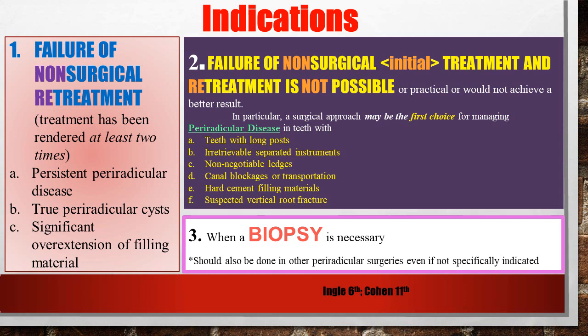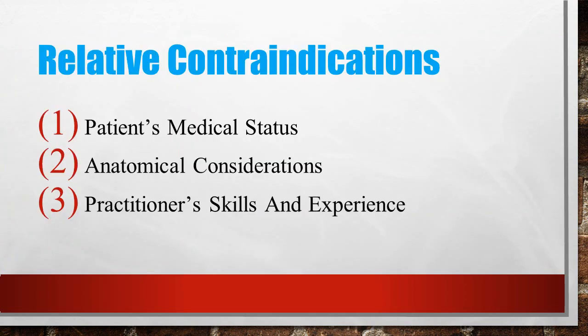What are the relative contraindications? The first and foremost is the patient's medical status. You have to have a detailed conversation with the patient's physician. If the patient is medically compromised, you know healing will be delayed, the surgery will take considerable time, there will be significant bleeding, and you will be prescribing medications — all of which should not interfere with the patient's health. Anatomical considerations are also important: if during surgery you are going to approach important landmarks like the maxillary sinus or the mandibular nerve, you have to give it serious thought as complications can be quite troublesome.